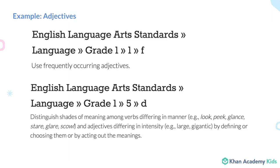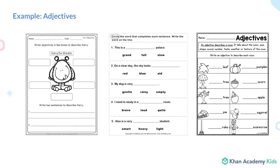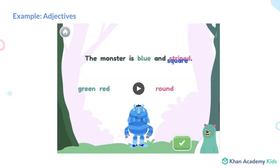This next example is a language standard around frequently occurring adjectives. Offline activities can include worksheets to describe objects like a monster, or fill in the blanks in a sentence. We wanted something that would bring to light the definitions and expand kids' understanding of what an adjective is. We created a monster maker where you can swap out different adjectives and concretely see how the monster changes.